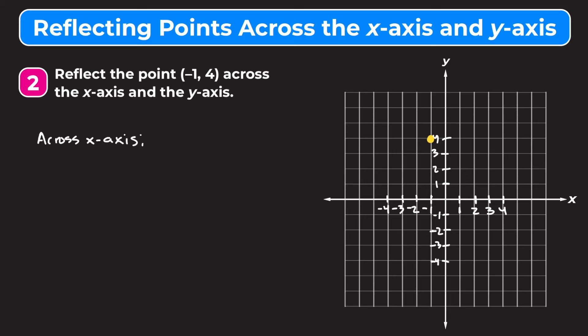We're going to reflect it visually across the x-axis. If we do that, we get the point (−1, −4) — down here. It just has to be the same distance from the x-axis on the opposite side. When we reflected it across the x-axis we got (−1, −4). The shortcut is that we changed the sign of the y-coordinate while keeping the sign of the x-coordinate the same.